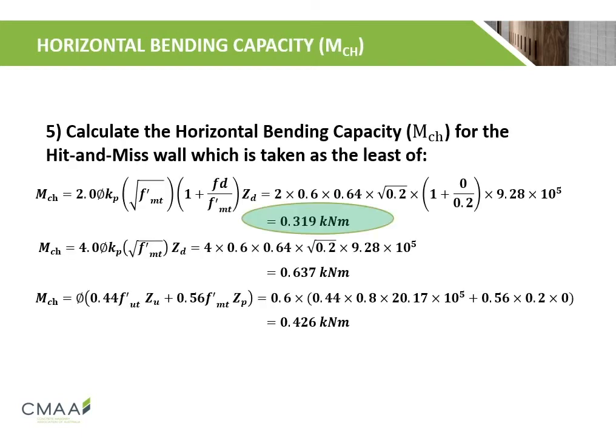Next, we calculate the horizontal bending capacity for the hit-and-miss brick wall, taken as the minimum of the three equations as stated in the previous slides. It was calculated that the first equation, which represents step failure, has the lowest value of 0.319 kNm.